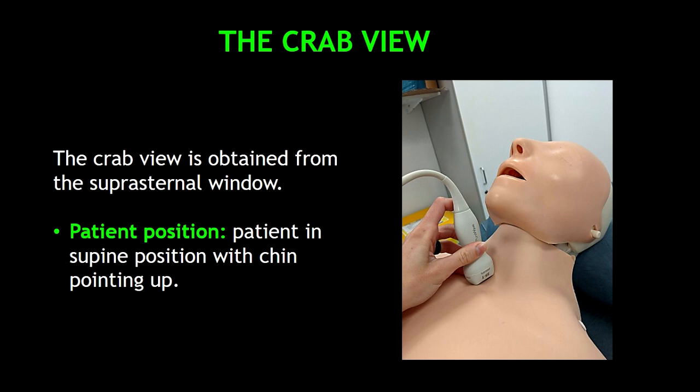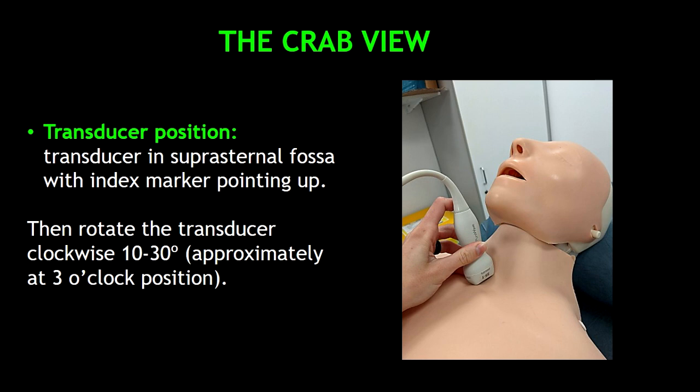So how do we obtain this view? The CRAB view is obtained from the suprasternal window. The patient has to be in supine position with chin pointing up. Now place the transducer in the suprasternal fossa with the index marker pointing up. Then rotate the transducer clockwise approximately 10 to 30 degrees at the 3 o'clock position.